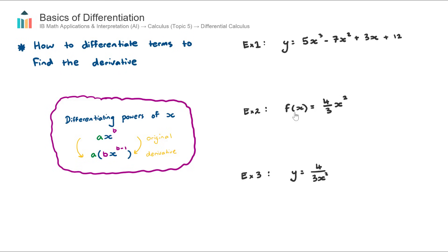We have three different equations or functions to differentiate. In Example 1 we have an equation: y equals something. The derivative notation for an equation is y-dash. Another notation is dy/dx, which stands for the change in y over the change in x — that gets to the core of what differential calculus is about, finding the slope of a tangent. In simple terms we can just call that y-dash.